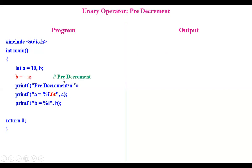Next comes pre-decrement. The two minus signs are placed in front of the variable, so prior to using the variable its value changes. The value of a, which is 10, becomes 9 before assignment, and that 9 is assigned to b. When compiled and executed, you get both a and b as 9.